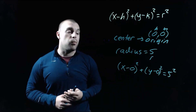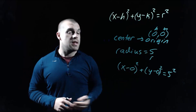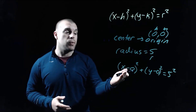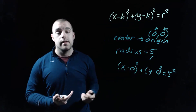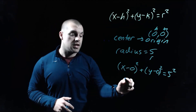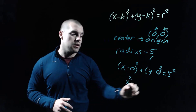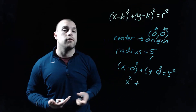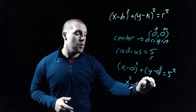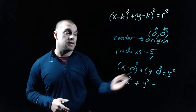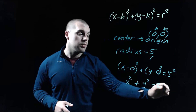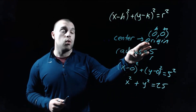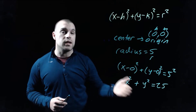Now for a little cleanup work: both parentheses say minus 0, and we don't really need to write minus 0 because if we have an x value and don't take anything away, it's still just x. So the first set of parentheses becomes x squared, and similarly y minus 0 is just y squared. On the right-hand side, 5 squared gives us 25. So there's the standard form of our equation centered at the origin, or (0, 0), with a radius length of 5.